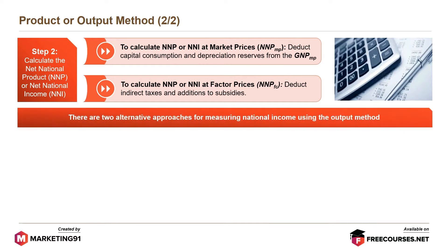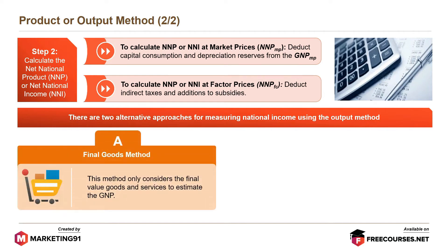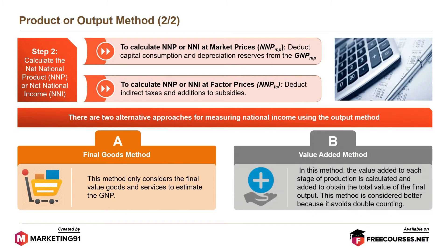There are two alternative approaches for measuring national income using the output method. The final goods method only considers the final value of goods and services to estimate the GNP. The value-added method calculates the value added at each stage of production and adds them to obtain the total value of the final output. This method is considered better because it avoids double counting.